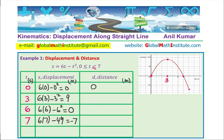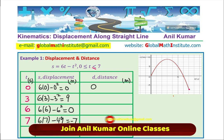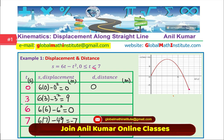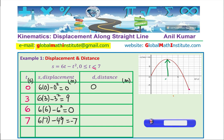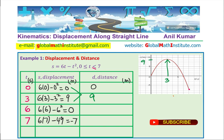Now let us see how we calculate the distance. Starting at the origin, displacement is 0 and distance is also 0. When you reach t equals 3 seconds, the object goes in one direction from 0 to 3, covering a distance of 9 meters. So the distance at t equals 3 is 9 meters.